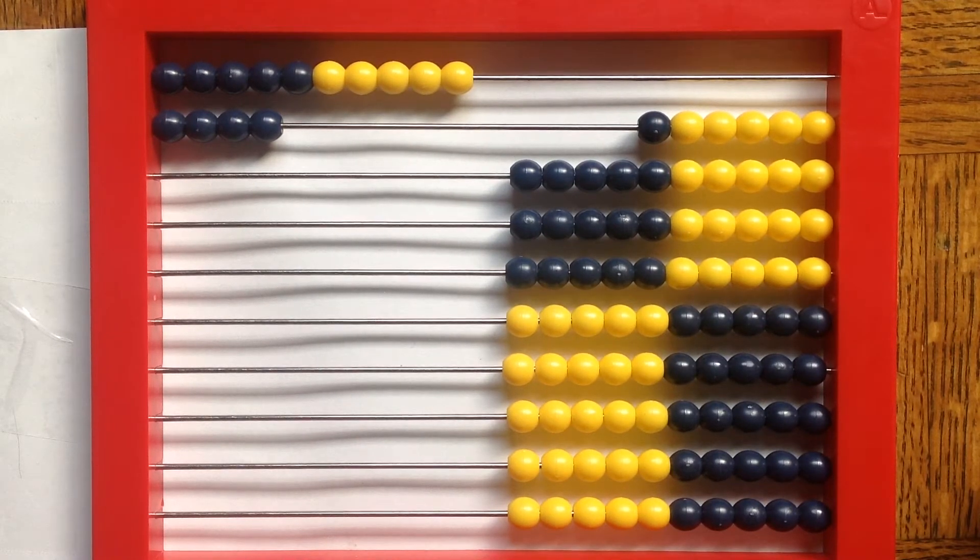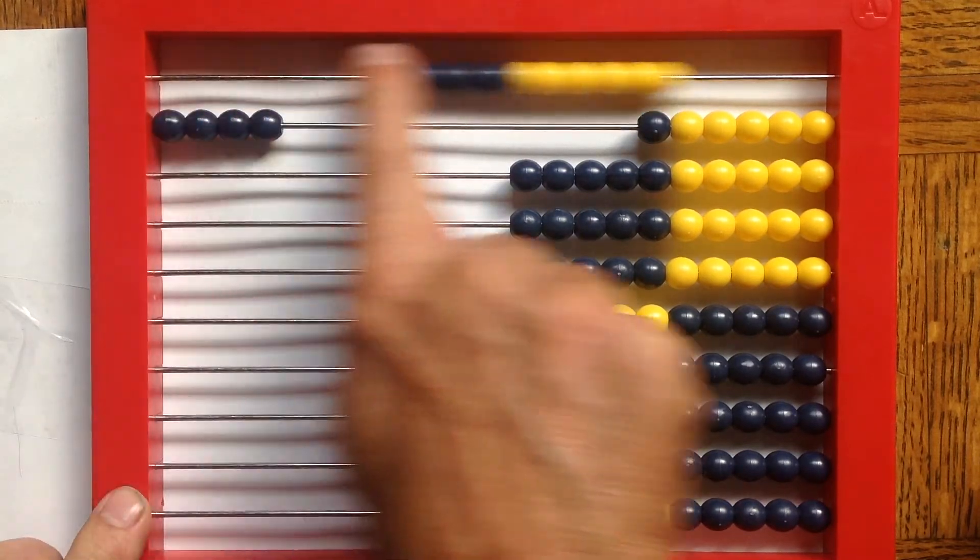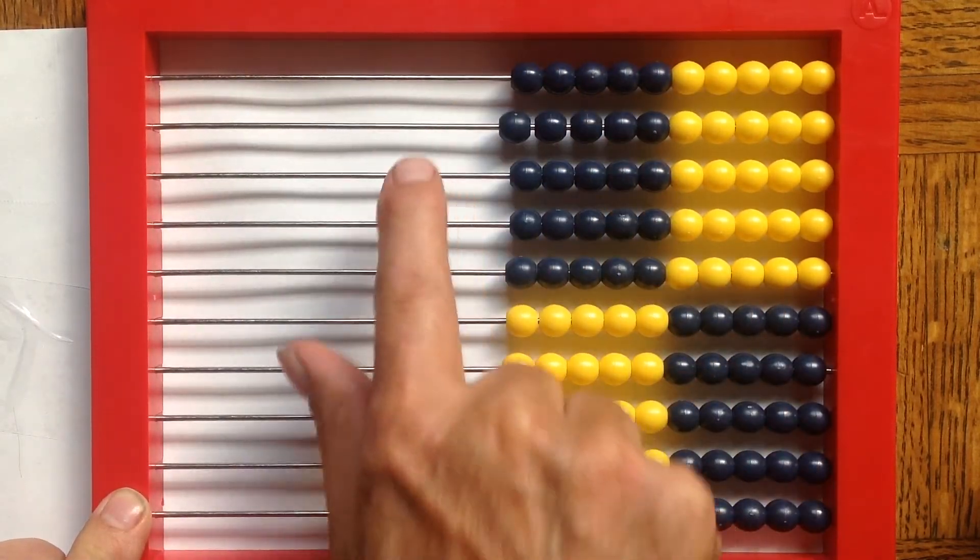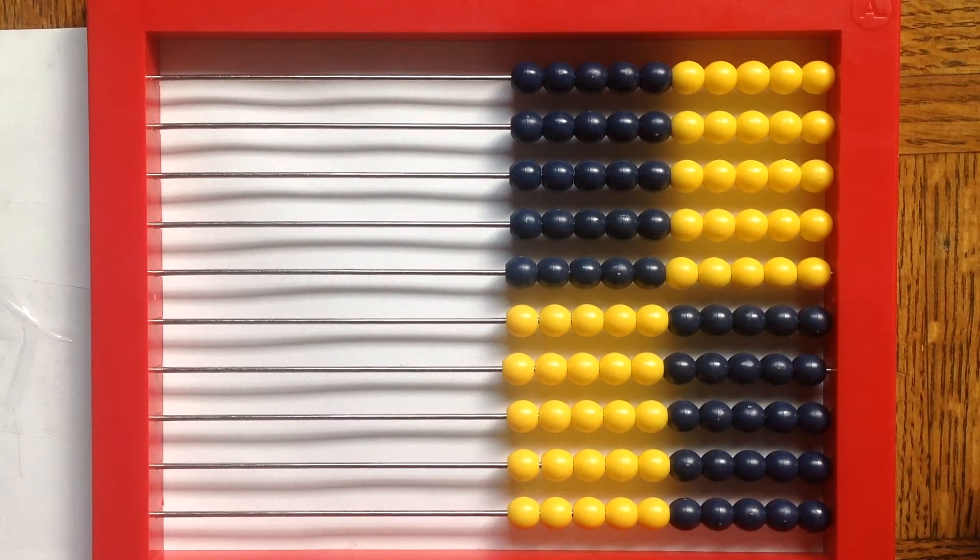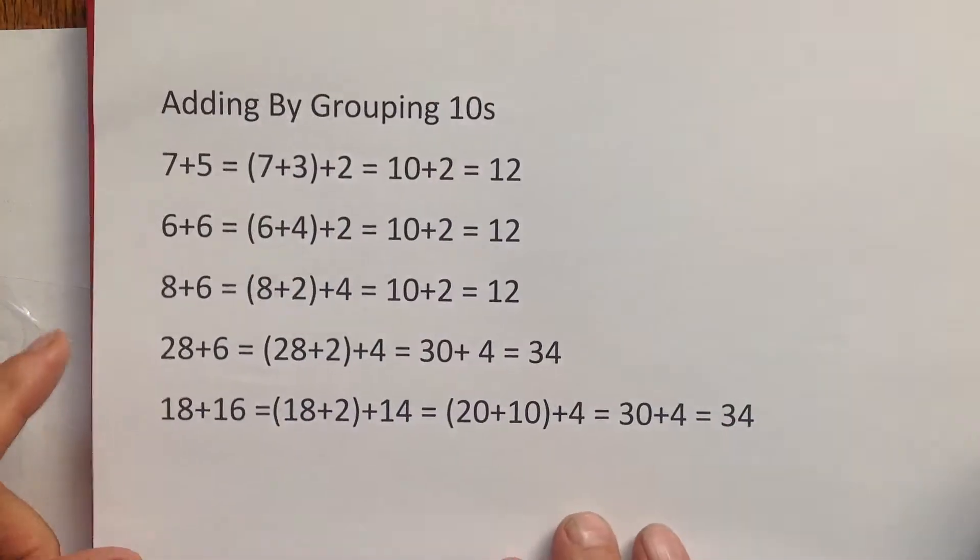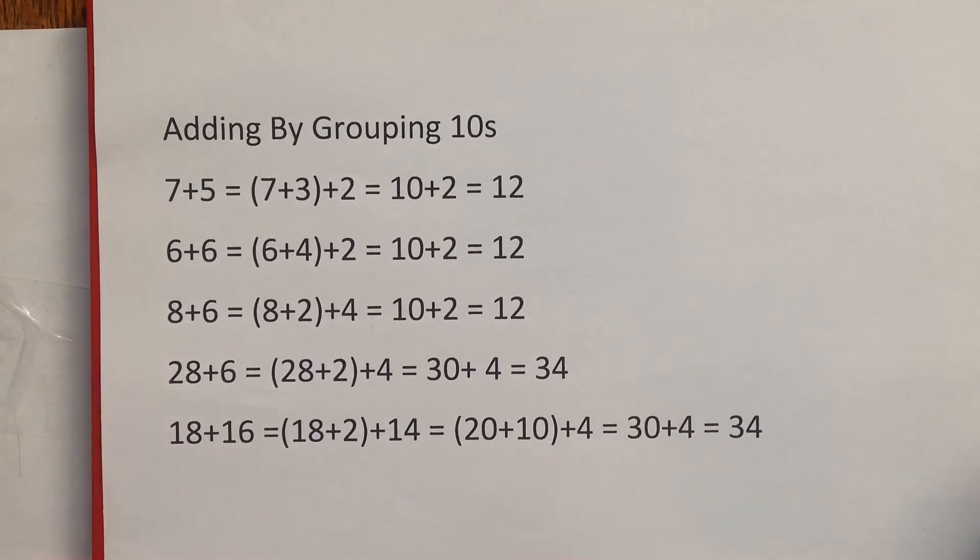Again, that is actually a combination of grouping by fives and grouping by tens. It's interesting. All right, why don't we try adding by grouping tens. Let's take a look.